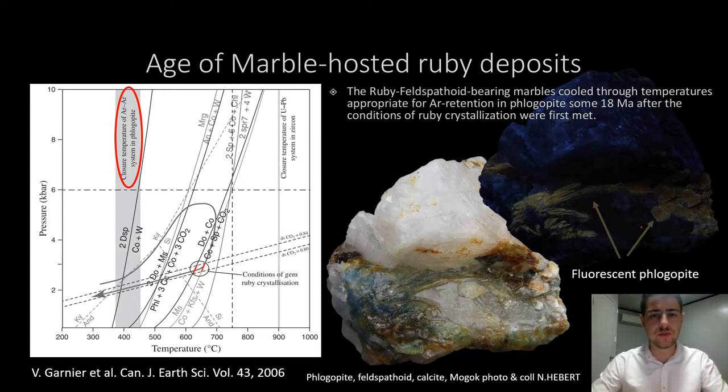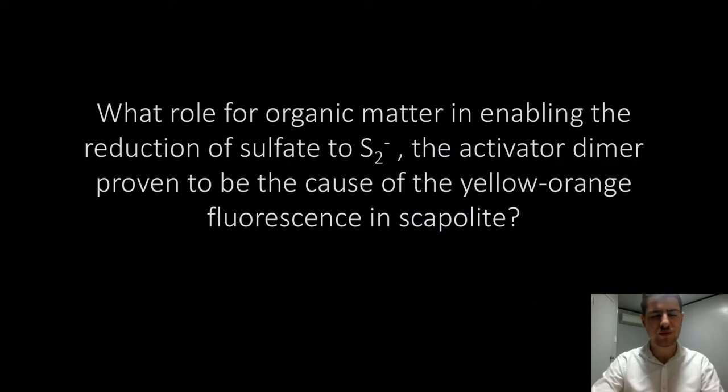Some work could be done on phlogopite from other paragenesis, the one with hackmanite, to see if the syenite got in place at about the same period. What's the role for organic matter in enabling the reduction of sulfate to S2-? I haven't found any remnants of graphite around. Either all the graphite from organic matter got turned into CO2, or maybe there just wasn't much in the first place, and there is another way to reduce sulfur.